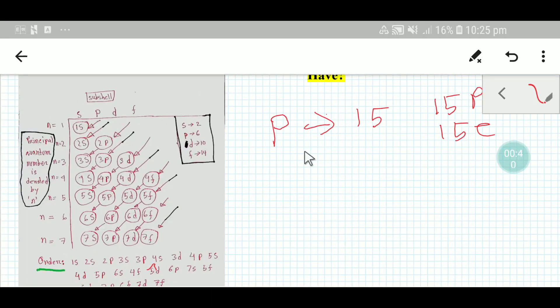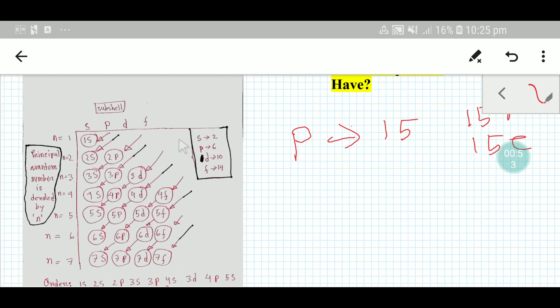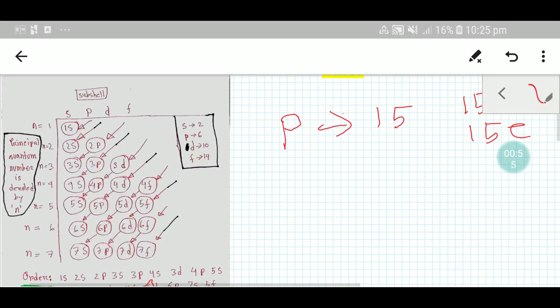Now we need to do the electronic configuration of phosphorus. As you know, phosphorus has 15 electrons. We'll adopt this diagram to do the electronic configuration of phosphorus. Let me remind you some points: s subshell can take maximum 2, p can take maximum 6, d can take maximum 10, and f can take maximum 14 electrons.